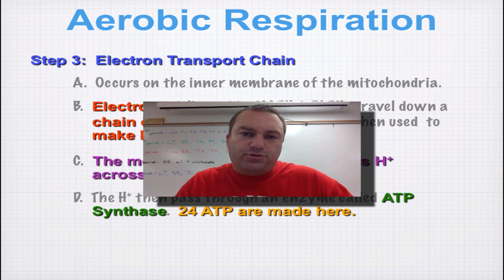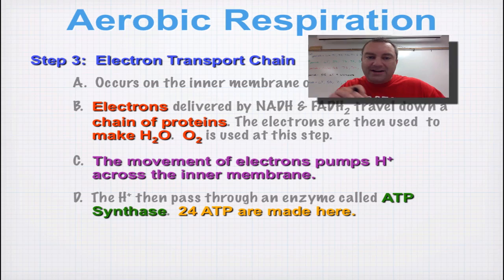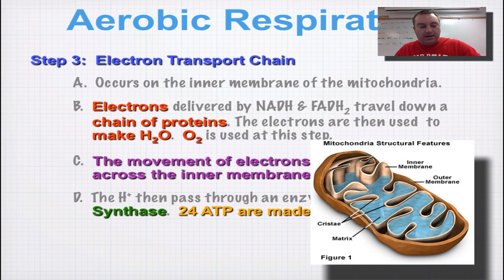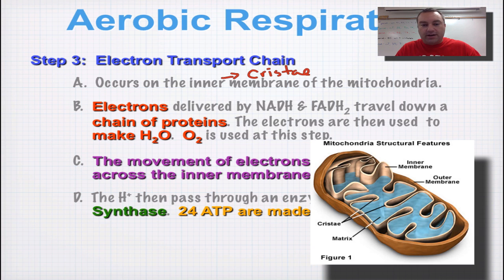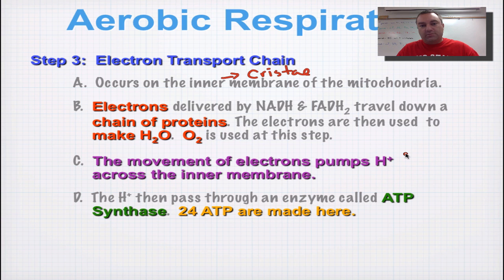The electron transport chain is going to occur on the inner membrane of the mitochondria. Specifically, I want you to remember that these parts of the inner membrane are the folds, which are called the cristae. The cristae, these folds, are going to make a higher surface area so that we can have more electron transport chains, because the more electron transport chains you have, the more ATP you can produce.